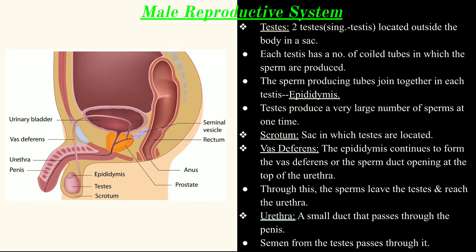The testes produce a very large number of sperms at one time. The epididymis continues upward as the vas deferens — also called the sperm duct — which opens into the top of the urethra. Through the vas deferens, sperms leave the testis and reach the urethra. The urethra is a small duct or tube through which both urine and sperms, along with secretions of the accessory glands, come out through the penis.